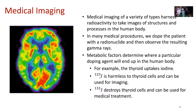Iodine-123 is harmless to thyroid cells and can be used for imaging. You give someone iodine-123, the thyroid will uptake the iodine — it's radioactive but not harmful — and you can image the radioactive emission coming from that thyroid. But iodine-131 is an isotope of iodine that destroys thyroid cells and can be used for medical treatment.